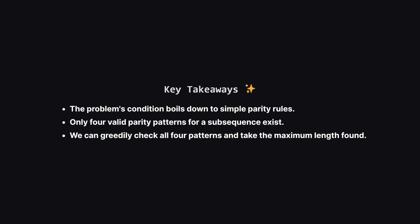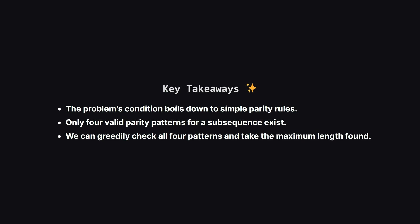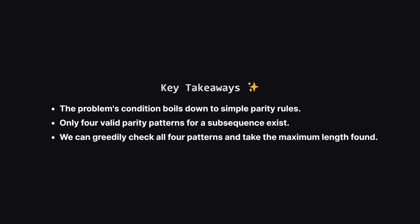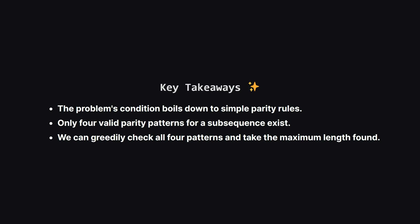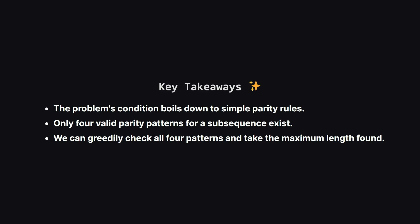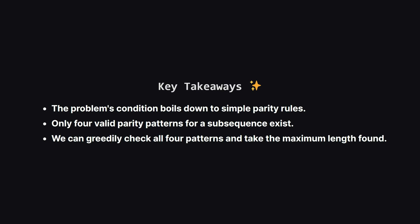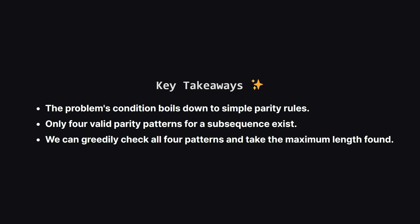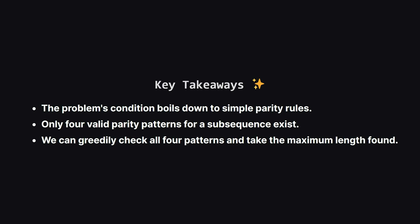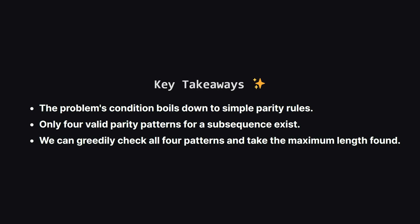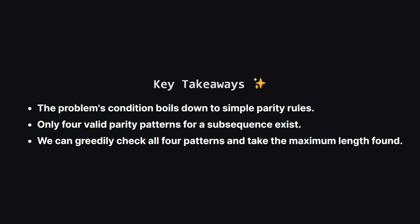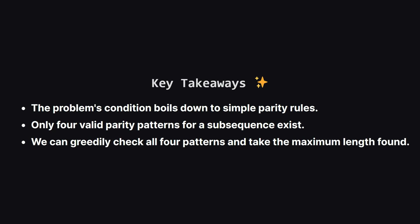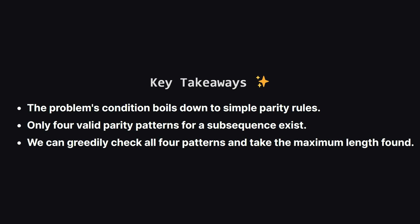So let's recap the main points. The key was realizing the problem's condition about sums was just a hidden rule about parity. This simplified everything, revealing that there are only four types of valid subsequences. With that knowledge, we could just build the longest possible sequence for each of those four patterns and pick the best one. It's a great example of how understanding the core properties of a problem can lead to a simple and elegant solution.